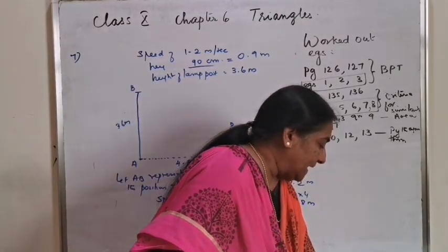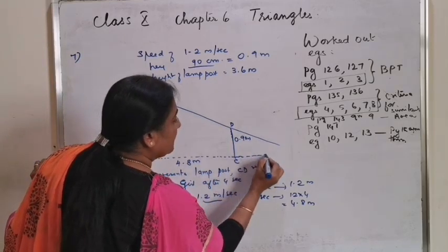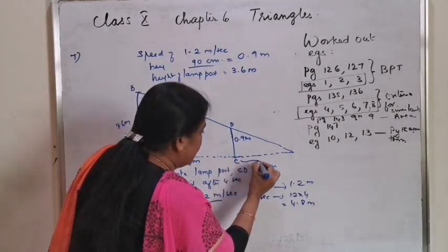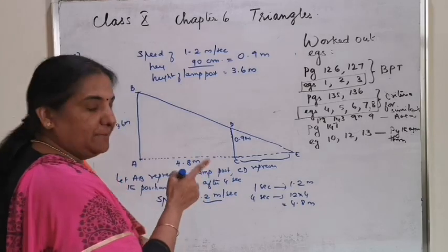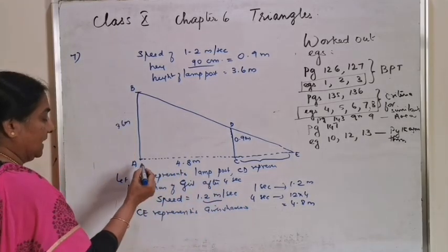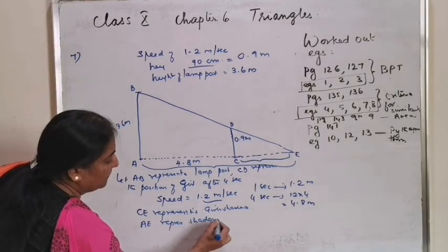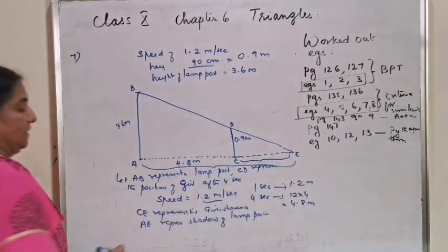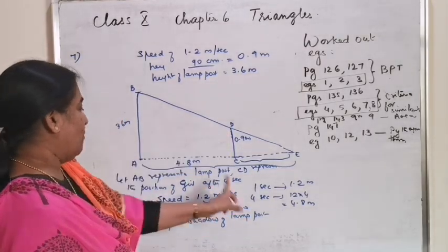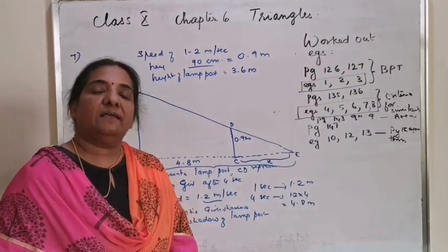Height of the girl is 0.9 m. The shadow CE represents the girl's shadow, and AE represents the lamppost's shadow. Let the girl's shadow length be X. Triangles ECD and EAB are similar by AA similarity, since angle E is common and the perpendicular angles are both 90 degrees. Therefore EC by EA equals CD by AB, which gives X by (4.8 + X) equals 0.9 by 3.6 equals 1 by 4.